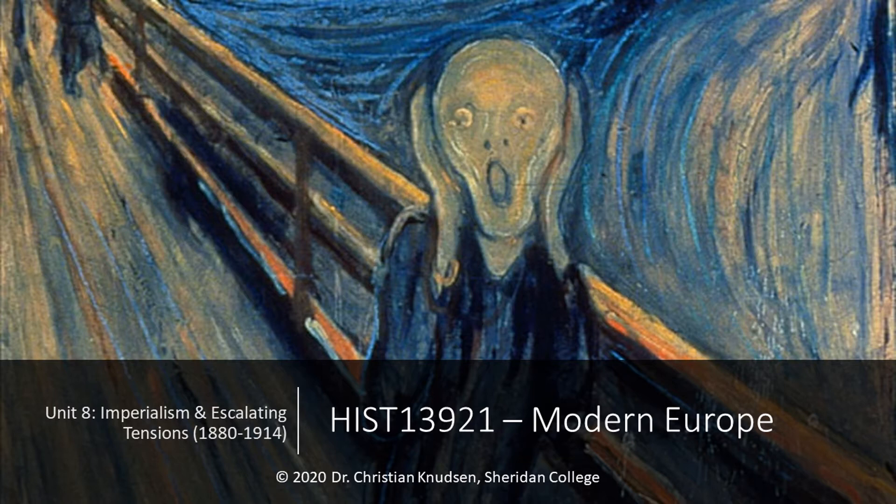In this unit, we're going to see the age of optimism be replaced by a general anxiety across Europe, as the competition and runaway militarism starts to lead towards war. What you see here is a painting from 1893 by Edvard Munch, The Scream, which in many ways reflects the fear and the horror that many people experienced at the end of the 19th century, as we move closer and closer to World War I.